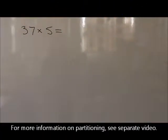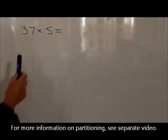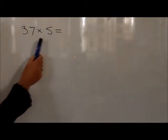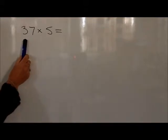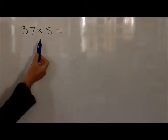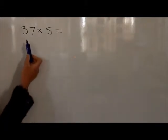In year three, children use partitioning to carry out multiplication questions. For example, with the question 37 times 5, they will partition the 37 into 30 and 7, and this is then multiplied by the 5. So they would first